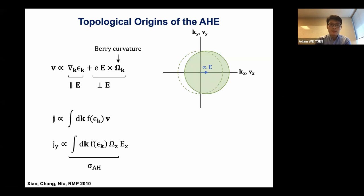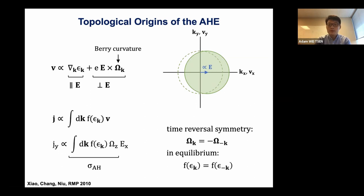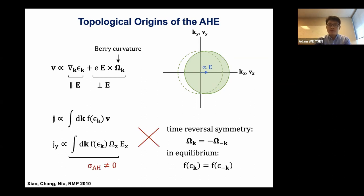We can ask under what circumstances we'd expect to see an anomalous Hall effect. It doesn't happen in just any material. If the material has time reversal symmetry, then the Berry curvature is an odd function in momentum. At equilibrium, the distribution function is an even function of momentum. So integrating an odd function multiplied by an even function gives zero. To get an anomalous Hall effect, we have to break one of these things — and typically we break time reversal symmetry because we're looking at a magnetic system.